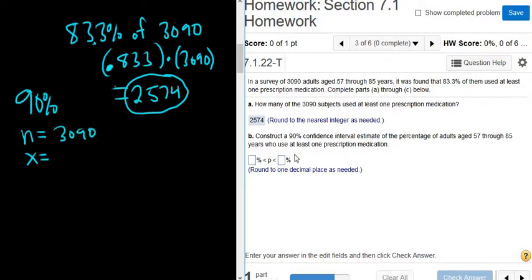x is the total number of successes. If you look at the last sentence, it will always tell you what success is. In this case, success is using at least one prescription medication. So we have 2,574 adults who use one prescription medication. So we have the observations and the successes and we have the confidence level.